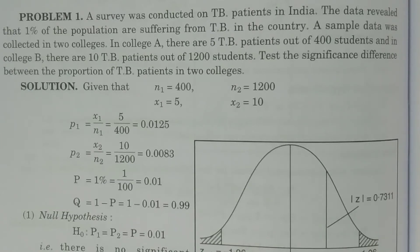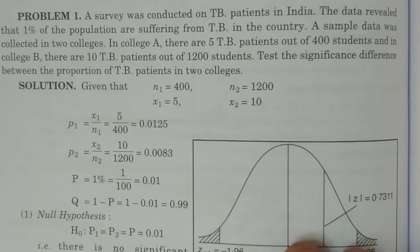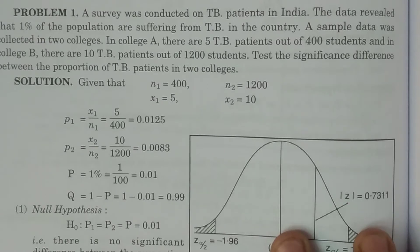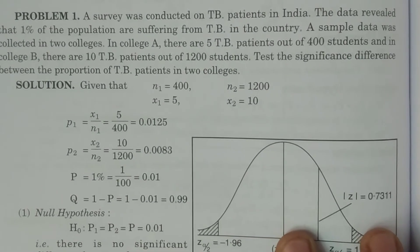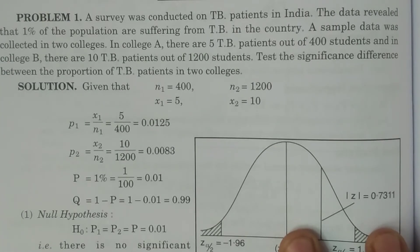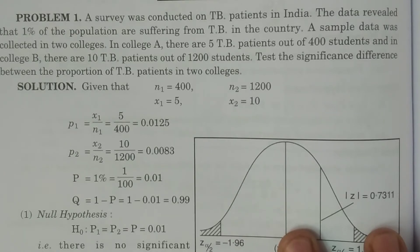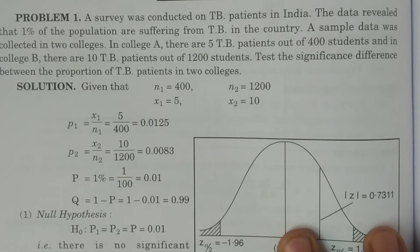Welcome to B.Sc. Statistics students. In this class, I explain problems of the test for two proportions. There are two cases we have: capital P is given, and capital P is not given. Capital P means capital P1 is equal to capital P2 is equal to capital P, which means the samples are drawn from the same population.